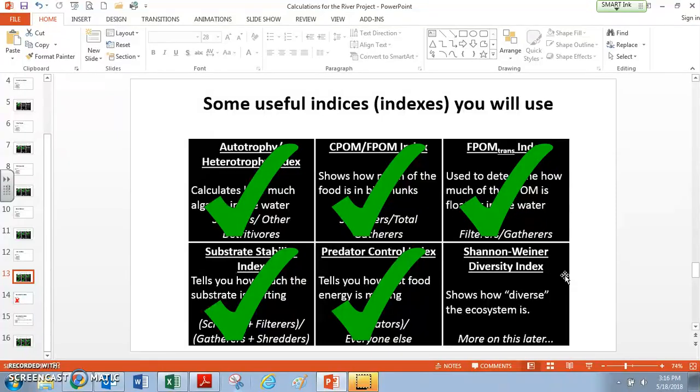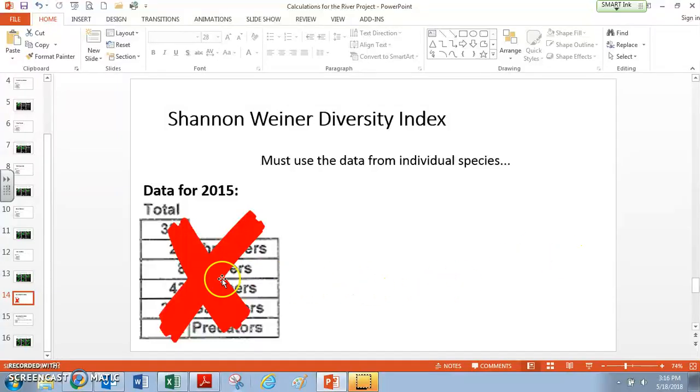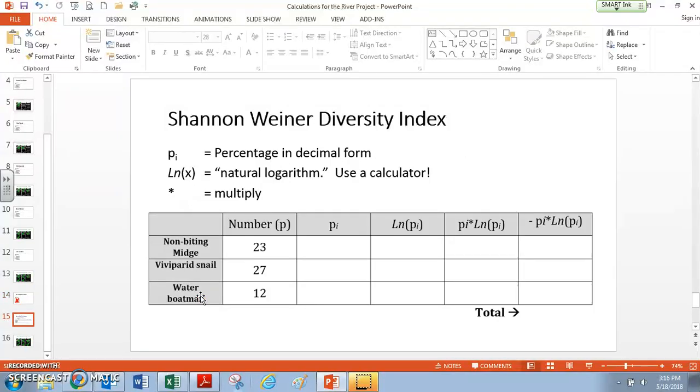So the thing about the Shannon-Weiner Diversity Index is that we can't use these feeding groups that we used for the other indexes. These won't work. So instead, we actually have to use data from individual species, and we have to set up a table. Now, even if we want to use the website that I'm going to show you, we still have to set up a table, at least to write out the species and their number, just to keep that organized.